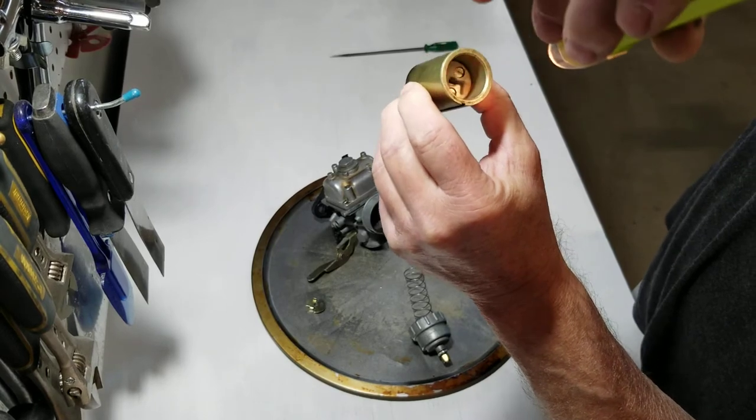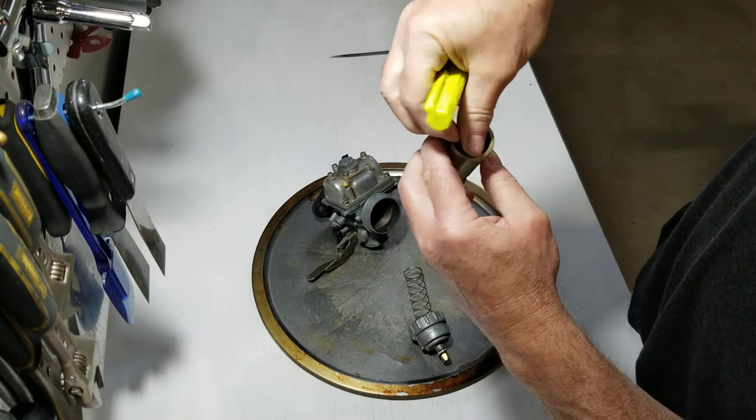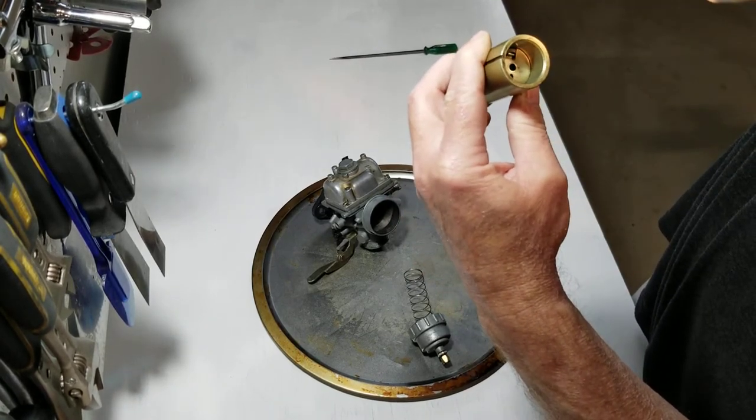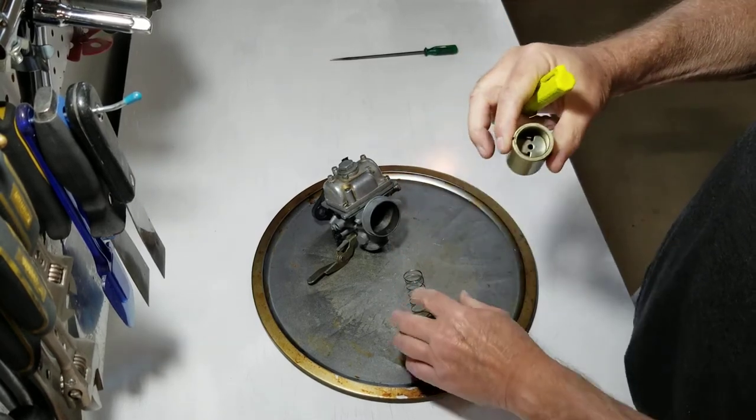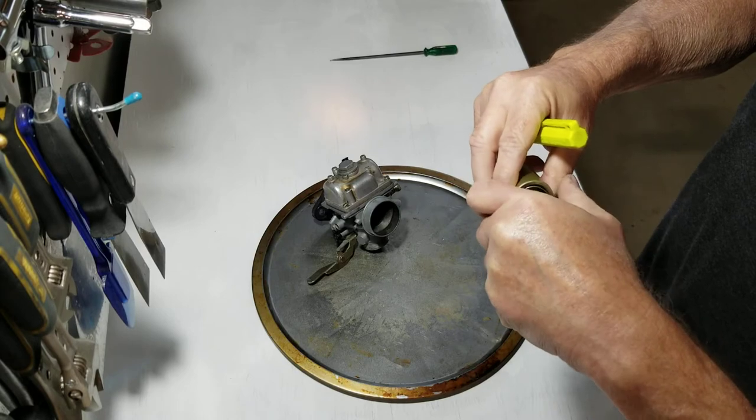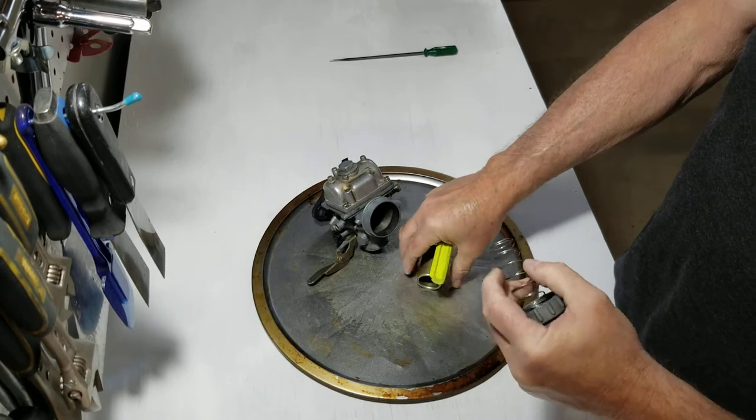It hooks in there and then this keeper goes down over it and sits in there like this and locks it into place. It's locked in place by the spring pushing down on it and keeping the keeper from coming out.